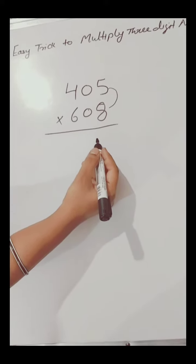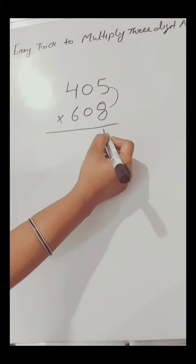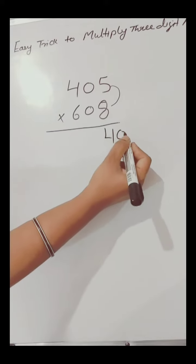5 and 8, if we multiply them, we will get 40. Now we will multiply 6 and 4, which equals 24.